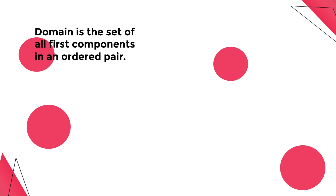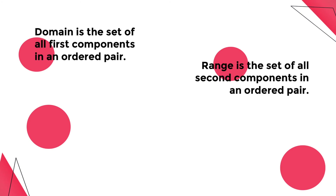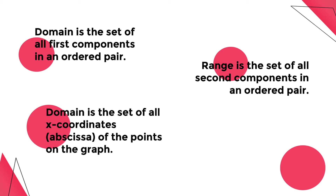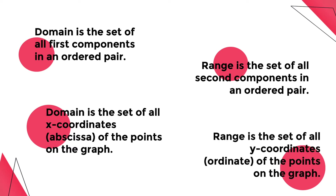Domain is a set of all the first components in an ordered pair. Range is a set of all the second components in an ordered pair. Domain is a set of all x-coordinates, or abscissa, of the points on the graph. And lastly, range is a set of all y-coordinates, or ordinate, of the points in the graph.